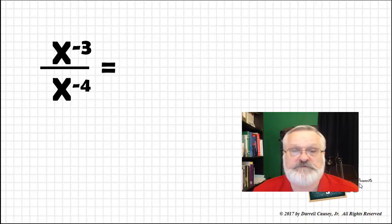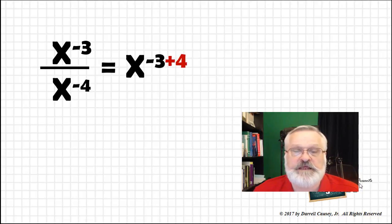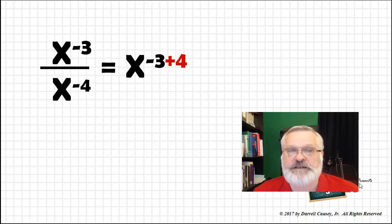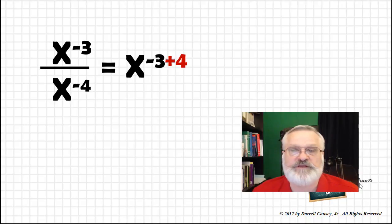Another way to look at it using our shortcut is that x to the negative three plus four, because the negative four is going to change signs. Or you can look at it as when you subtract a negative you get a positive. So negative three plus four equals one, and that's the same as x.